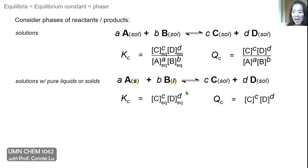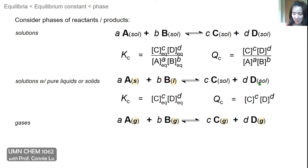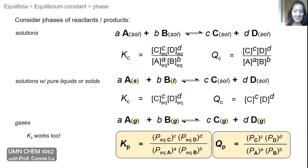So A and B disappear and we just have expressions that have the products C and D. Now, what if A, B, C, and D are all gases? In that case, you can use Kc and the concentration of gases, which would be appropriate.